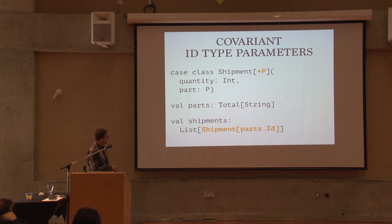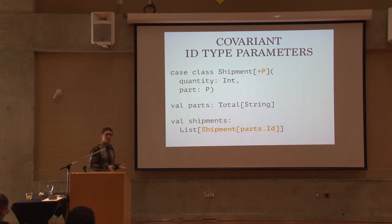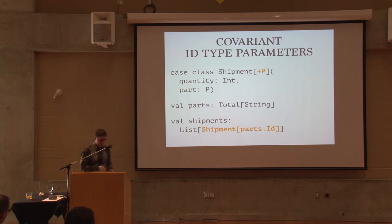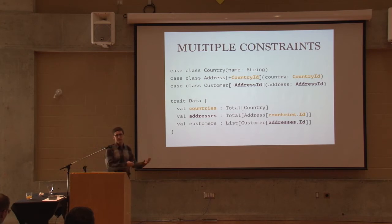We also want that covariance property on shipments. So that list of shipments at the bottom — if we insert into parts, we want to be able to reuse the old list of shipments and add a new shipment possibly referencing the new part, and we want upcasting to work here without having to do anything special.